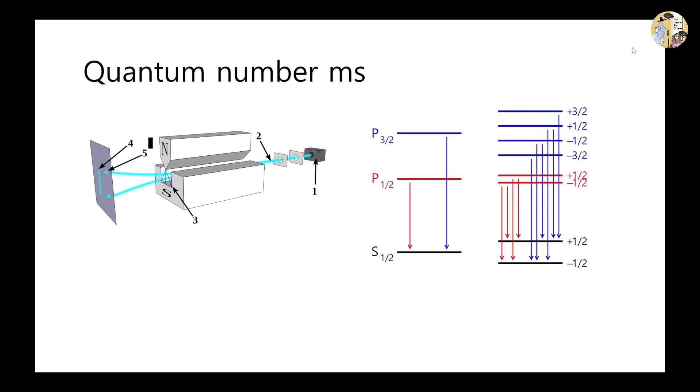ms has only two values, plus half and minus half, and this determines the direction of the electron's rotation. Orbitals always fill up by a pair of electrons with opposing spins. The reason why the values of ms are all half-numbers is because they have to explain the splitting into even numbers.